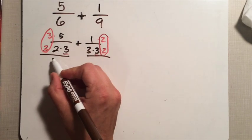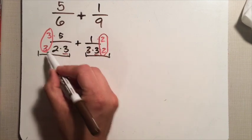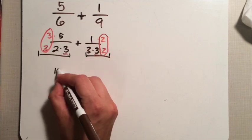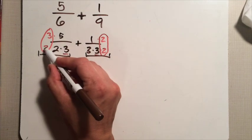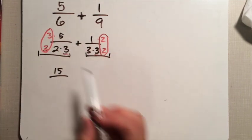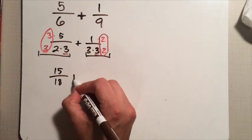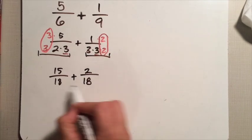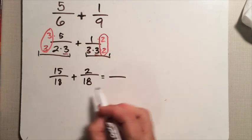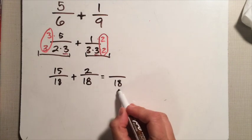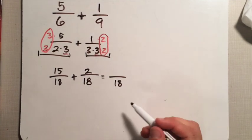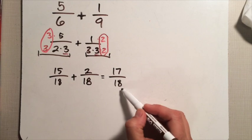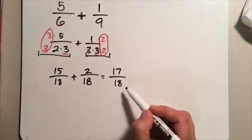Now that I have my common denominator, I need to simplify these two terms and then add them together. This term is now three times five in the numerator, which is fifteen, and three times three times two in the denominator — three times three is nine, nine times two is eighteen. Here I have one times two in the numerator, that's two, and exactly the same denominator eighteen. So fifteen pieces plus two pieces gives me seventeen pieces, size one-eighteenth. The answer is seventeen eighteenths.